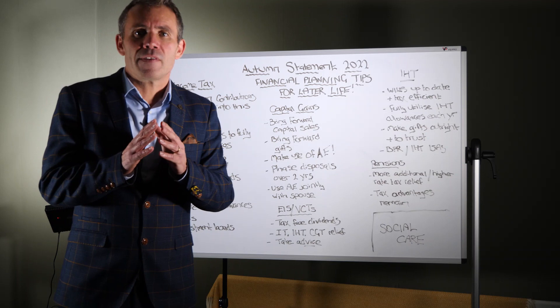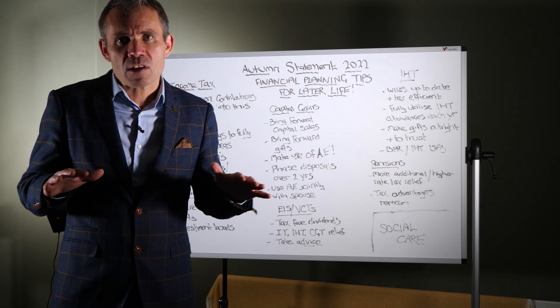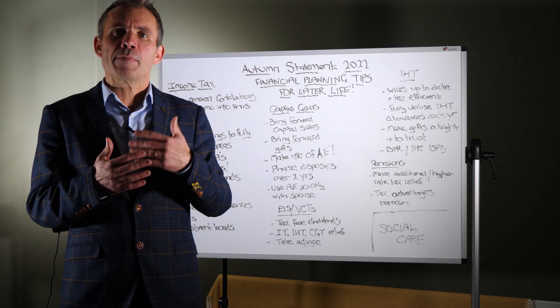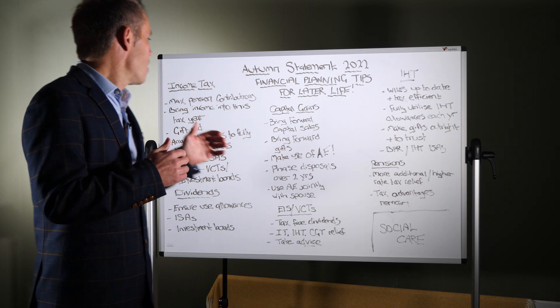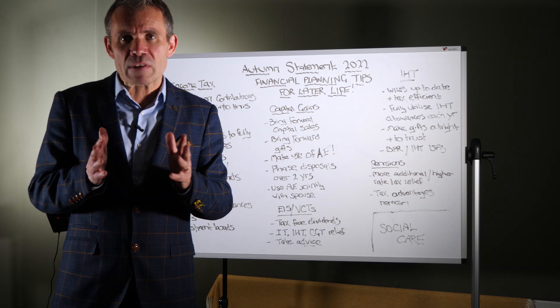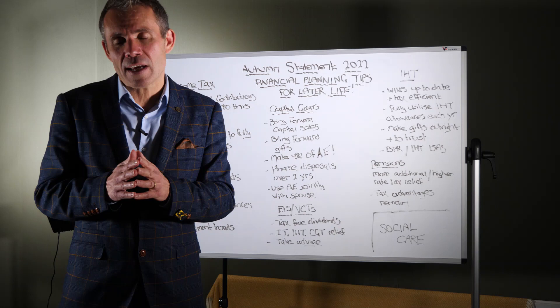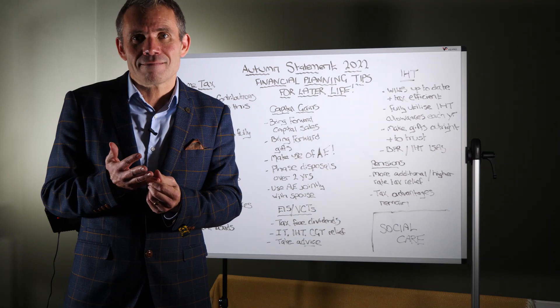As I said, the earnings by which you'll have to pay additional rate tax now drops down to £125,140 from £150,000. All the other thresholds remain fixed for at least another six years. So a lot more people are going to be paying higher rate tax and additional rate tax over the next few years. So the first thing I would say would be maximize your pension contributions, especially if you're coming up to retirement.